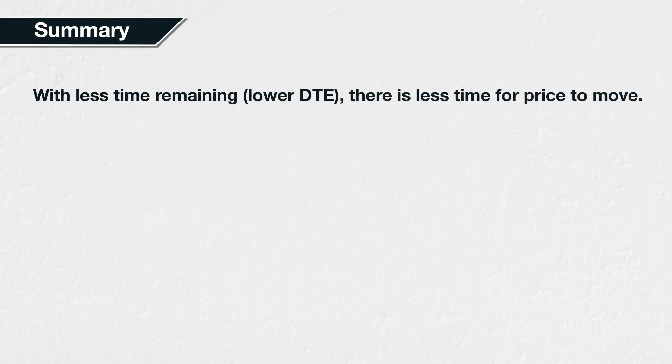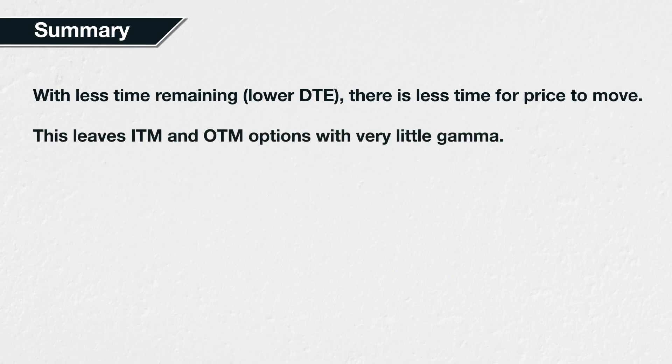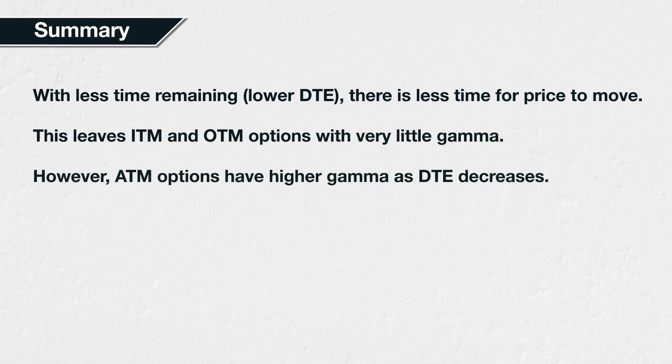In summary, with less time remaining until expiry, there is less time for price to move. This means that large moves before expiration are less likely, leaving both in-the-money and out-of-the-money options with very little gamma, because it would take a very large price move to change their delta significantly. For at-the-money options though, this leads to an increase in gamma, because with a small amount of time until expiry, even small changes in the underlying price have a large impact on the likelihood of the option expiring in-the-money or out-of-the-money.